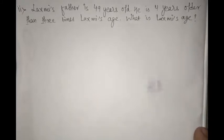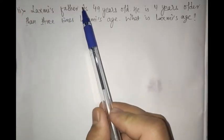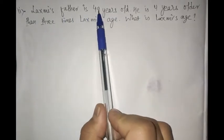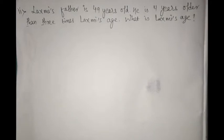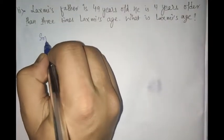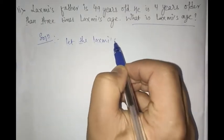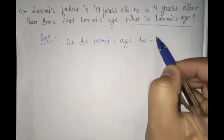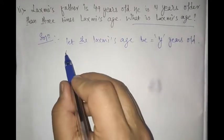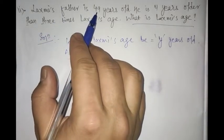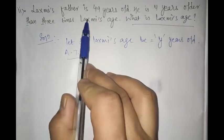Proceeding forward to part 2 from question number 3 of exercise 4.4. The question states: Lakshmi's father is 49 years old. He is 4 years older than 3 times Lakshmi's age. What is Lakshmi's age? We have done a similar sum in the previous exercise. So, what we have to find is Lakshmi's age. Let Lakshmi's age be y years — a new variable y.